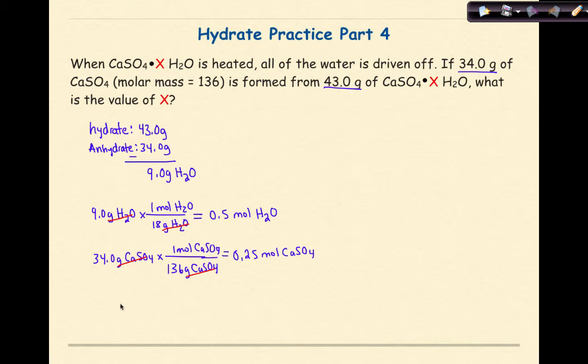Finally, my last step is to take the moles of the water and divide that by the moles of my salt, which is CaSO4. The moles of water is 0.5 moles of H2O. I'm going to divide that by 0.25 moles of CaSO4.